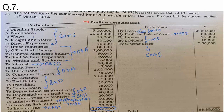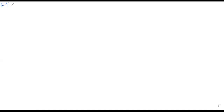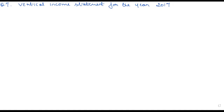Now I am going to the whiteboard — we will start solving question number seven. We are preparing a vertical income statement. Quickly prepare the columns needed. The heading is: Vertical Income Statement for the year ended 31st March 2014.